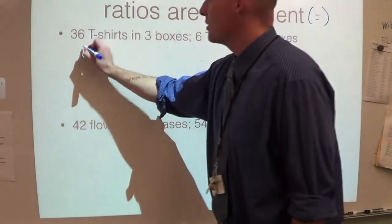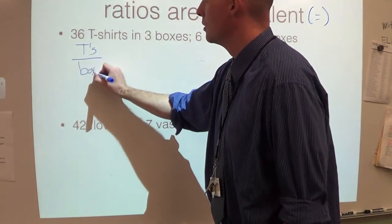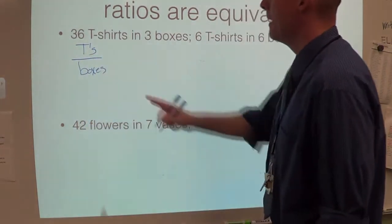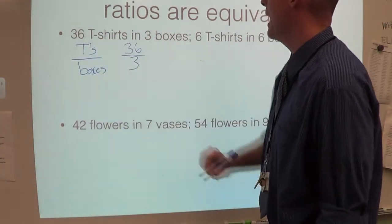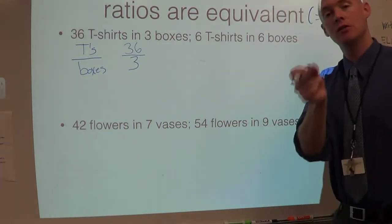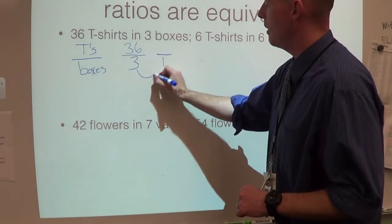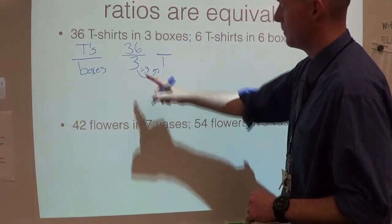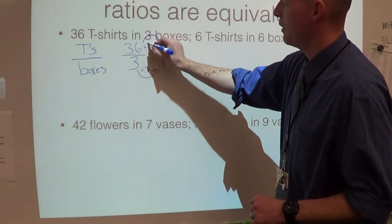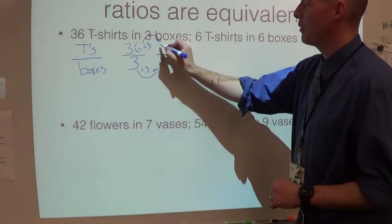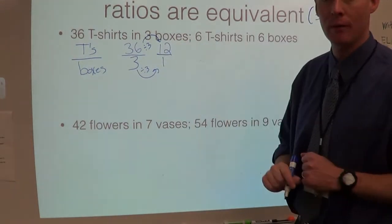36 t-shirts in three boxes — I'm going to do t-shirts over boxes. So 36 t's in three boxes. We're going to use unit rates, so let's find that unit rate. We're going to put it over one. How do I get from three to one? We're going to divide by three. If we do it to the bottom, we have to do it to the top. Divide by three. 36 divided by three is 12. So the unit rate for the first ratio is 12 to one.